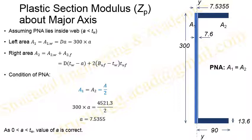In the second case, we assume the PNA lies inside the web (a < t_w). The left area A1 = 300 × a (depth × a). Setting A1 equal to A/2 and solving gives a = 7.5355 mm. Since this value is positive and less than the web thickness t_w, the solution is valid and our assumed premise holds true.